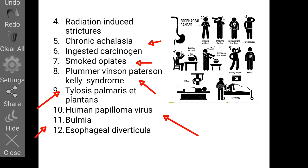Esophageal carcinoma is also associated with human papillomavirus (HPV) infection. In bulimia, repeated microtrauma due to vomiting may contribute to the malignant transformation of esophageal tissue. Esophageal diverticulum is also a risk factor for the development of esophageal carcinoma.